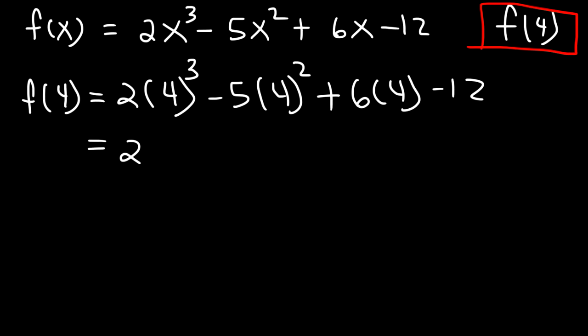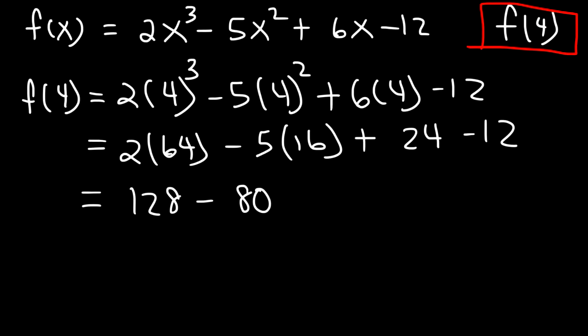Now 4 to the third power, that's 4 times 4 times 4. 4 times 4 is 16. And 16 times 4 is 64. Now 4 squared is 16. 6 times 4 is 24. 2 times 64, that's 128. And 5 times 16. 5 times 10 is 50. 5 times 6 is 30. 50 plus 30, that's 80. So 5 times 16 is 80.